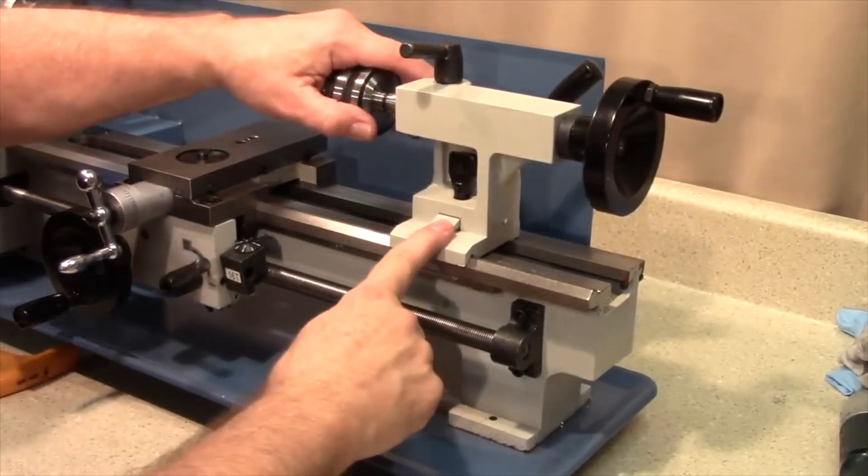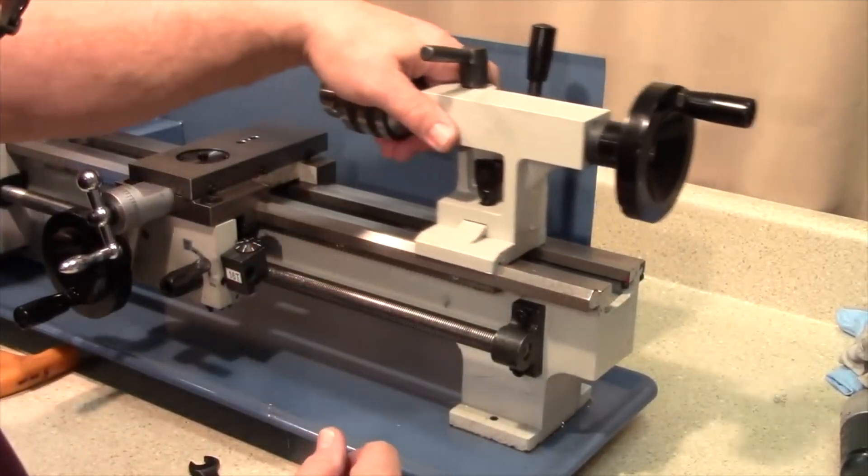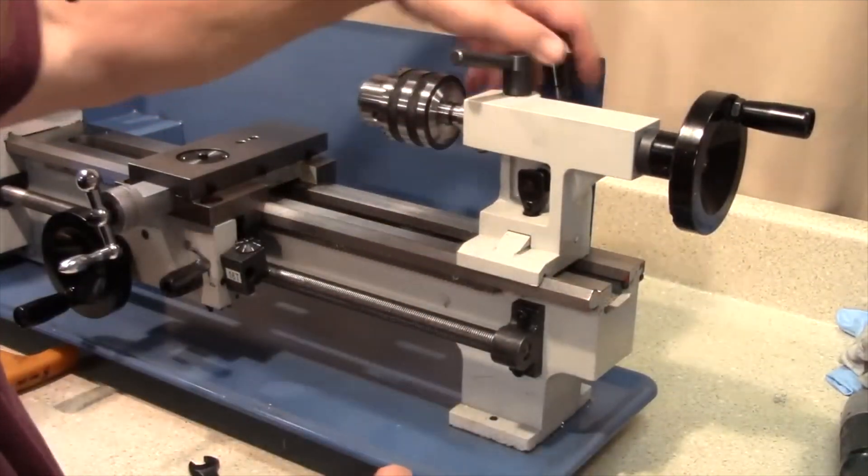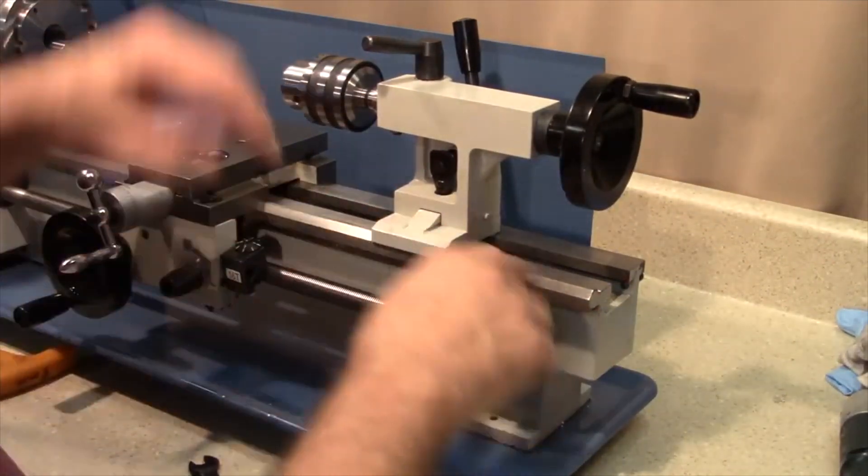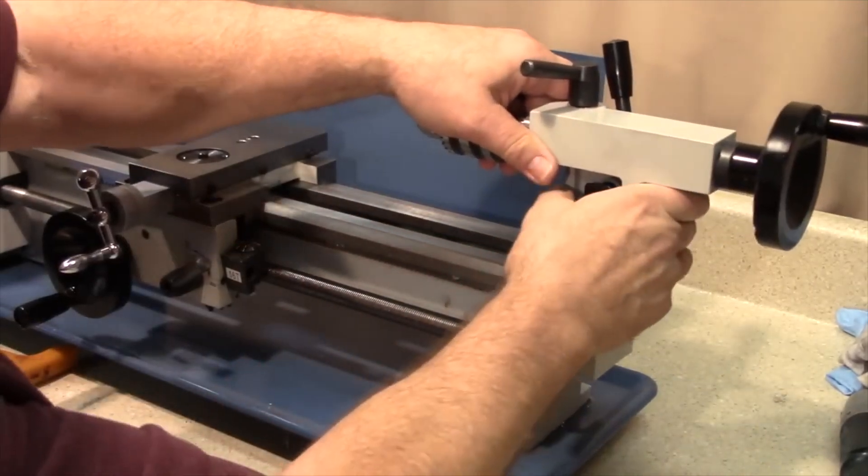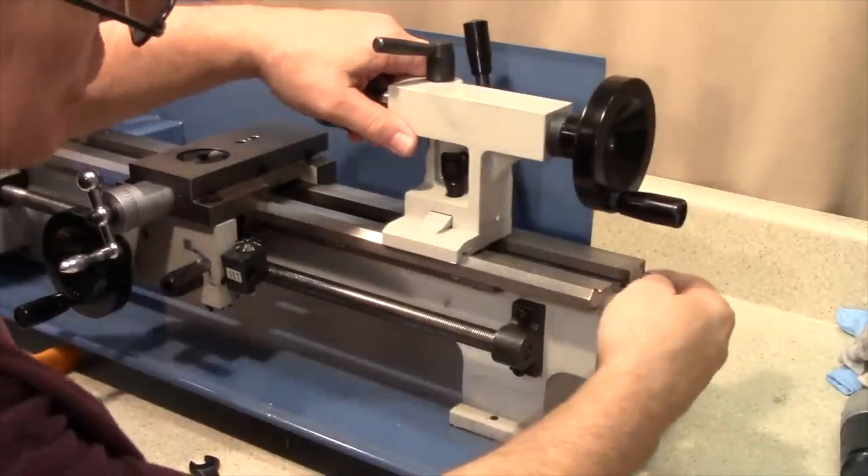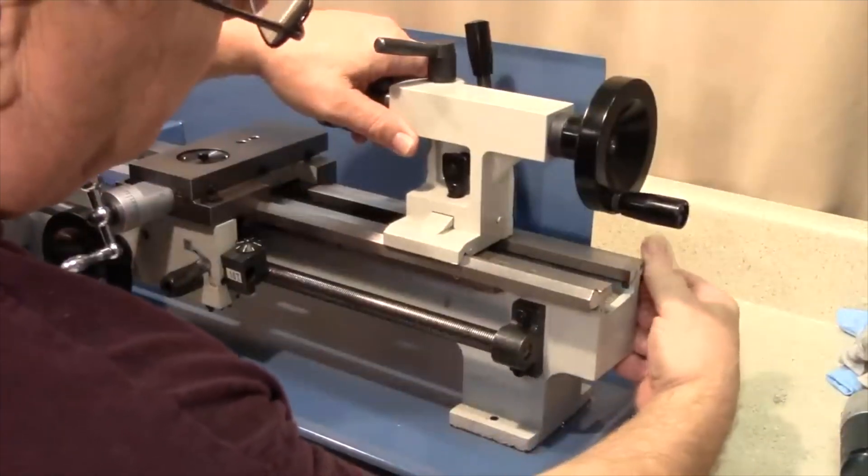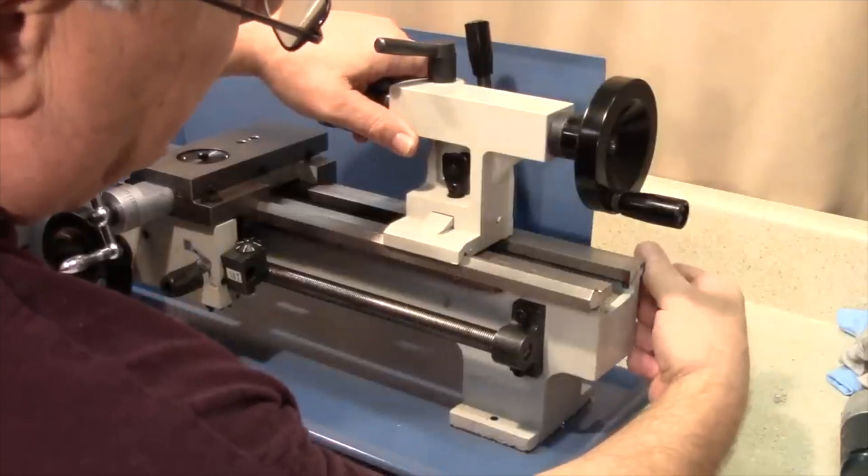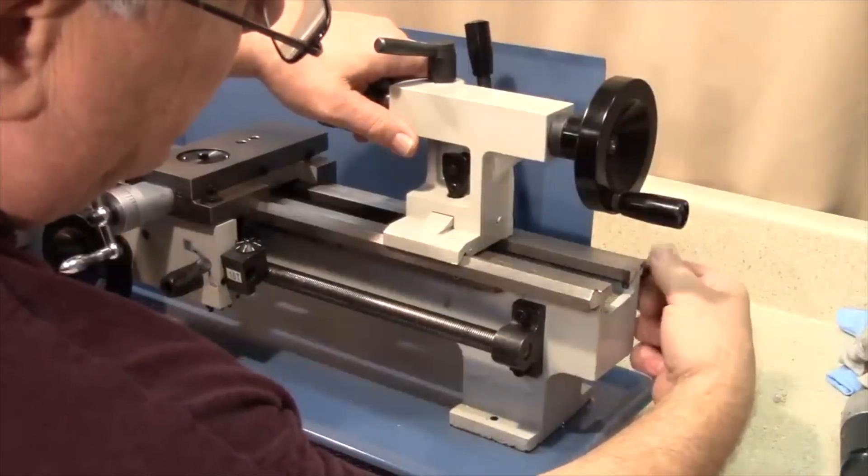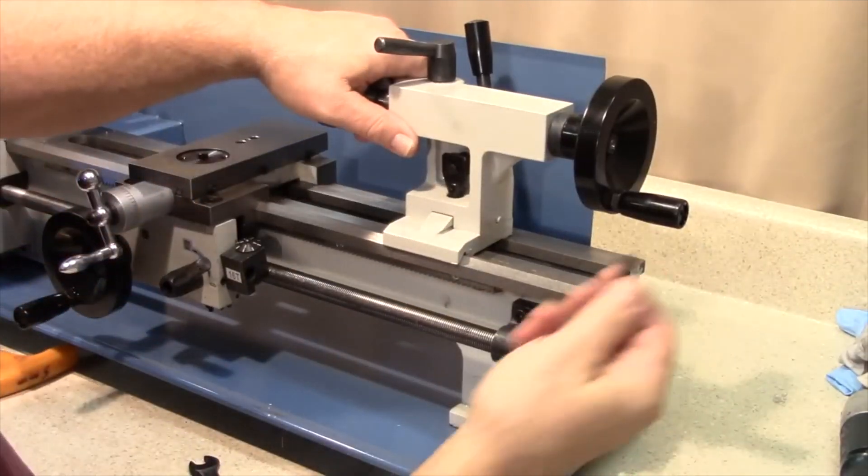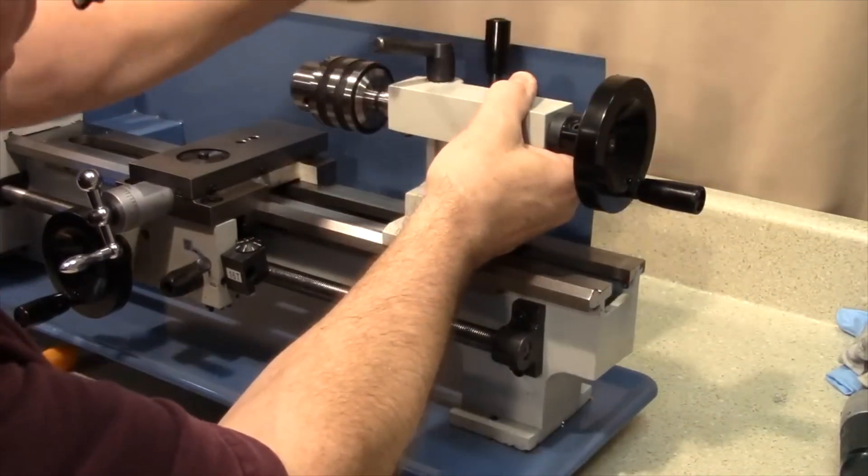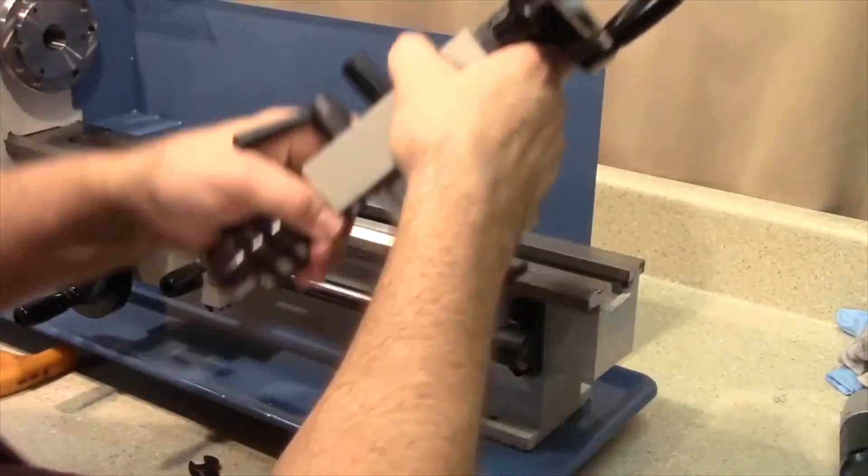Next I want to remove the tailstock. On most mini lathes you can just slide it right off the end, but on some lathes including this one there's a stop screw on the end to prevent you from inadvertently sliding it off when you didn't intend to. So you need to remove that screw if you have one. I have to unlock the tailstock and then I can slide that right off.